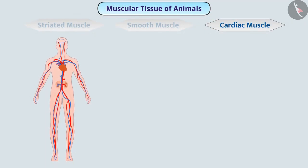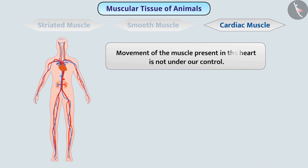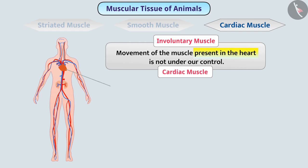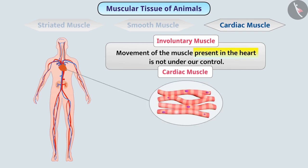In our body, the heart beats continuously. Muscles present in the heart contract and relax rhythmically throughout life, due to which the heart is able to pump blood. The movement of the muscle present in the heart is not under our control, so it is an involuntary muscle. Since this involuntary muscle is present in the heart, it is called cardiac muscle. When observed under a microscope, alternate bands of dark and light colors are observed. The cells of this muscle are cylindrical, branched, and uninucleate.